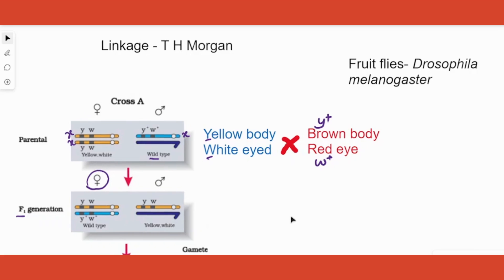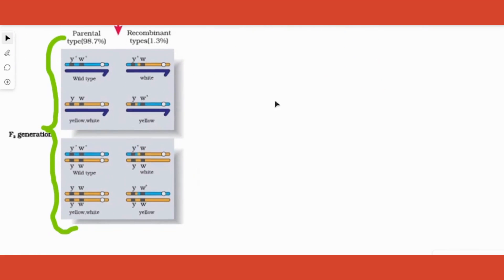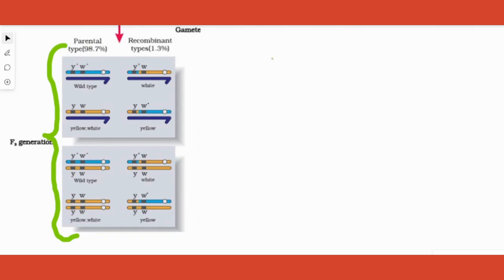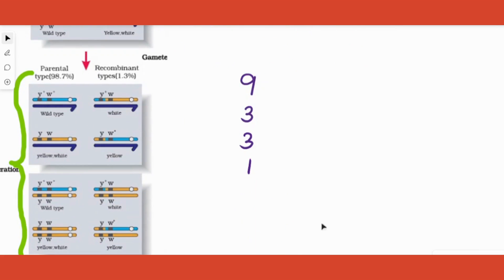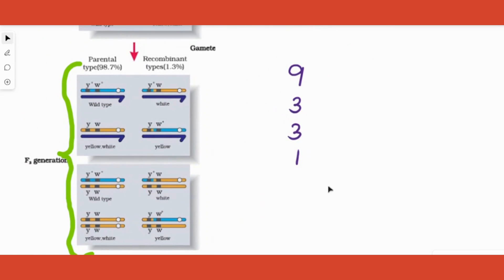In the F2 progeny, in case of Mendelian cross, we expect the dominant traits nine times, dominant plus recessive three times, three times - a 9:3:3:1 ratio. What should be expected is brown-red nine times, brown-white three times, yellow-red three times, and yellow-white only one time among 16 progenies. That's the phenotypic ratio in the F2 generation of Mendelian crosses.